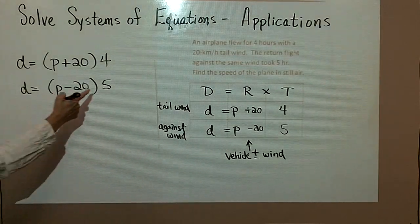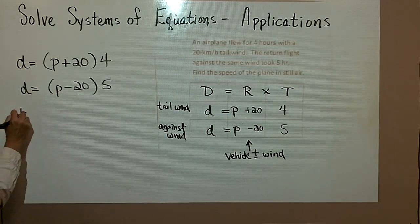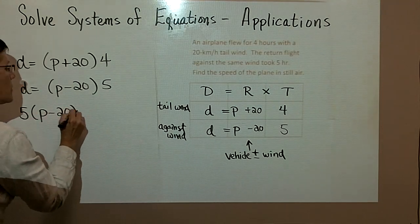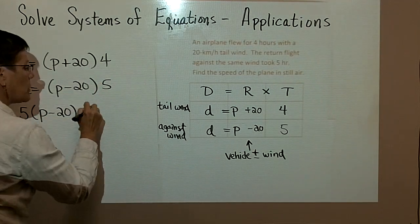So again, right here, I'm going to put the 5 times p minus 20 equals the 4 times p plus 20.